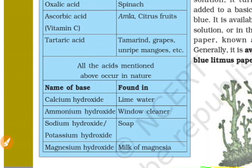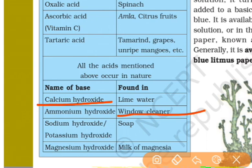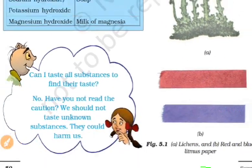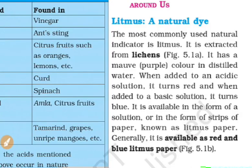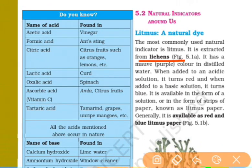Next one is base. Bases include calcium hydroxide, and ammonium hydroxide is used in window cleaners. We also use potassium hydroxide, sodium hydroxide, and magnesium hydroxide — also known as milk of magnesia.